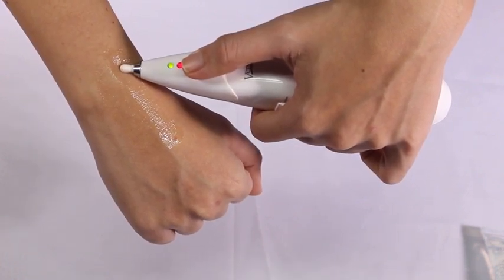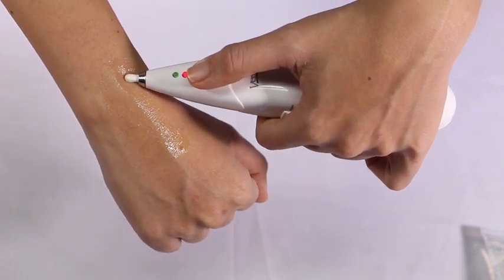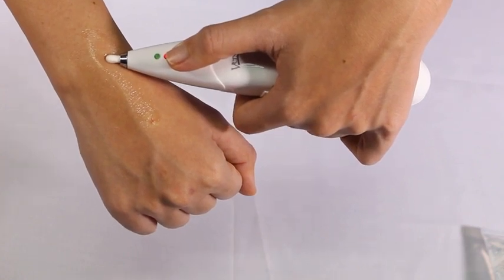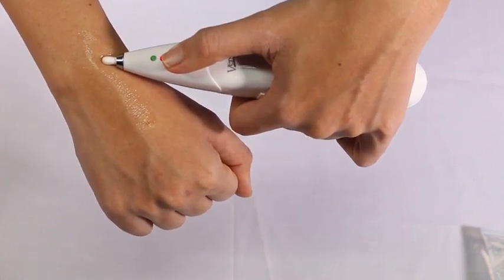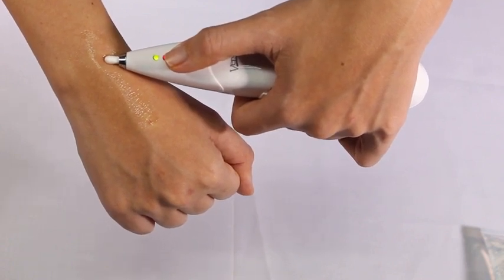The automatic timer sounds three beeps when the 20 seconds treatment time is finished and resets itself for the next treatment. If your finger is removed from the silver touch activator, conductivity will stop. Repeat the process for the next treatment area.